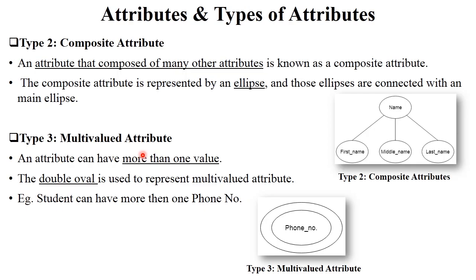The next type is multi-valued attribute. Multi-valued means more than one value. For example, student can have more than one phone number. So phone number is a multi-valued attribute — for this attribute there are multiple values for each student. Multi-valued attributes are denoted by a double ellipse.